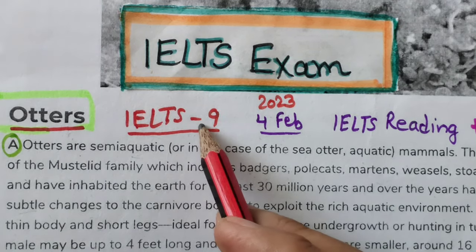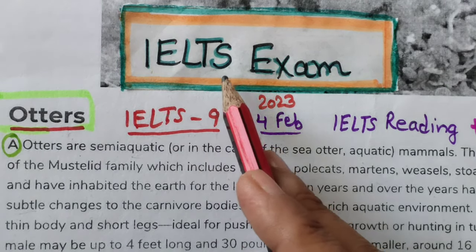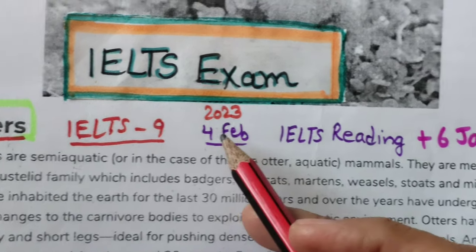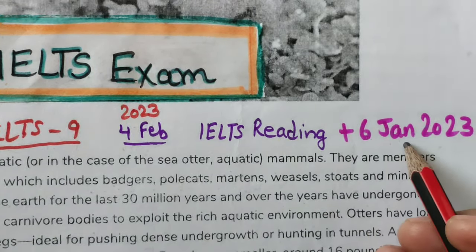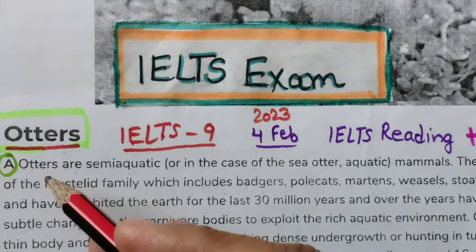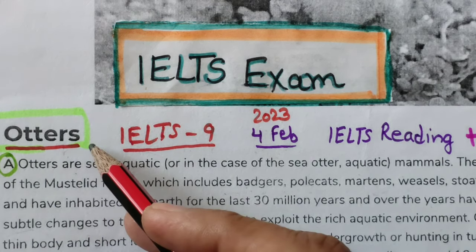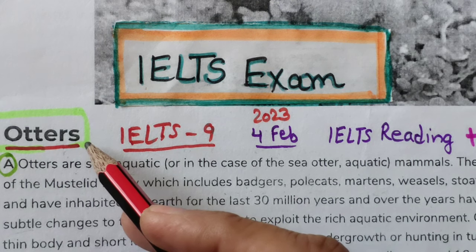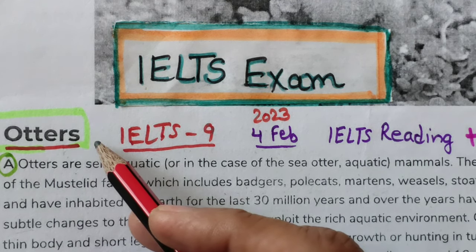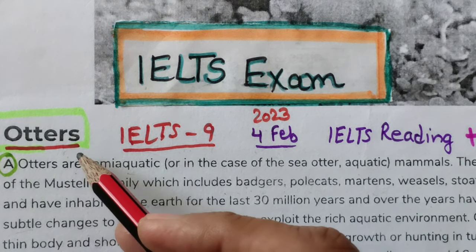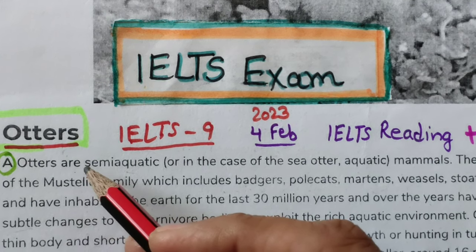Hello everyone, I am Monica from IELTS 9. We will be doing IELTS exam reading that was part of the 4th February 2023 and 6th January 2023 exams — the same reading passage repeated. The reading name is 'Authors' (Otters). In the next two days I will also be covering the other two reading passages: 'The Importance of Law' and 'Learning to Walk.' We will do those readings with full explanation.